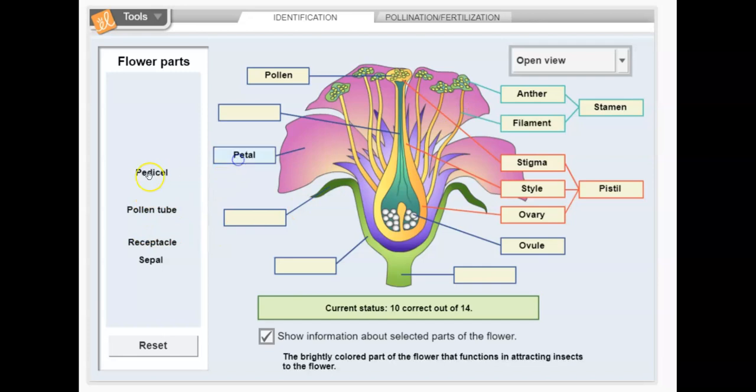Petals. I know what petals are, right? Those are flower petals. The brightly colored part of the flower that functions in attracting insects to the flower. I think these are sepals. Yep. These are the leaves, the floral leaves or individual segments of the calyx. It protects while the bud, right? It protects the bud while the flower is forming inside the bud.